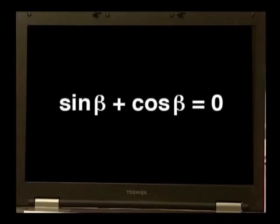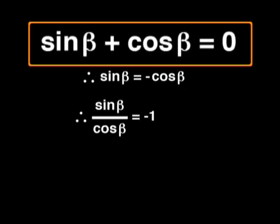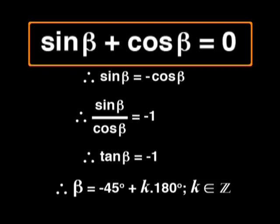How about the next one? Sine beta plus cos beta equals zero. Well, that's definitely an equation. I solved this one by subtracting cos beta from both sides and then dividing both sides by cos beta. This gave me tan beta equals minus one. I know that tan beta is one at 45 degrees, so it's negative one at negative 45 degrees. So the general solution will be minus 45 degrees plus k times 180 degrees, for k any integer. Great Taboho, you're really cruising today.